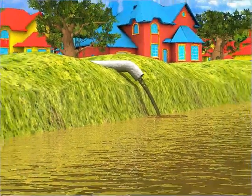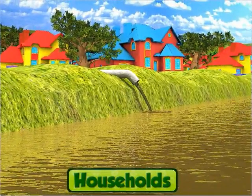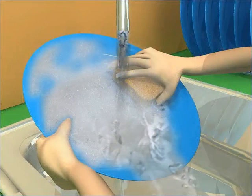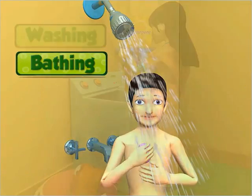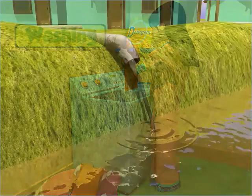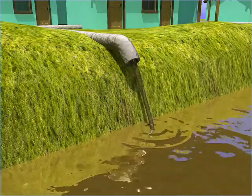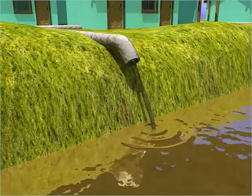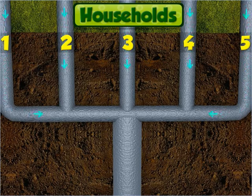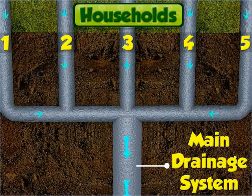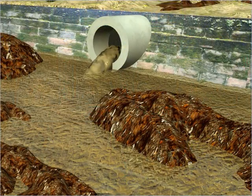Water pollution starts from households. In households, water is used for cleaning, bathing, and washing. The waste water from such activities flows into the household drainage channels. The household drainage channels are connected to the main drainage system that ends in a nearby water body. This way, water gets polluted.